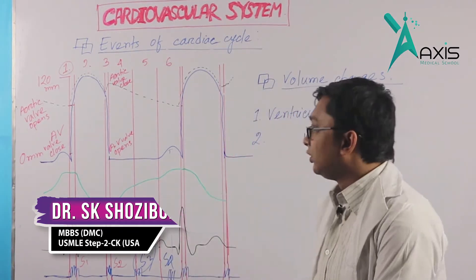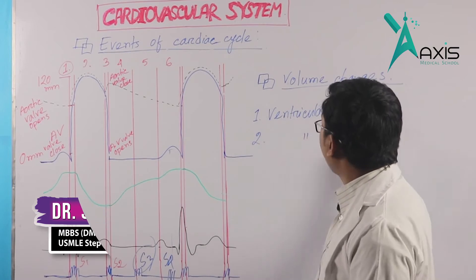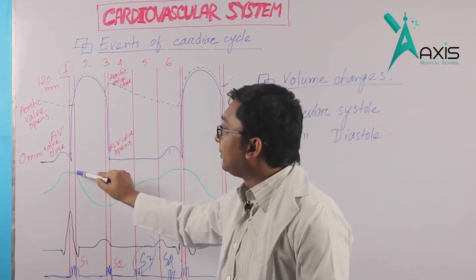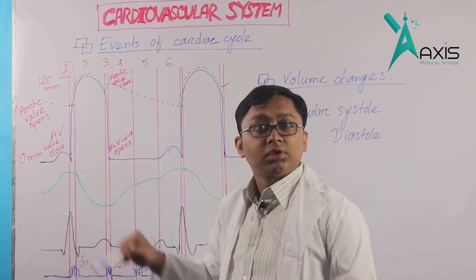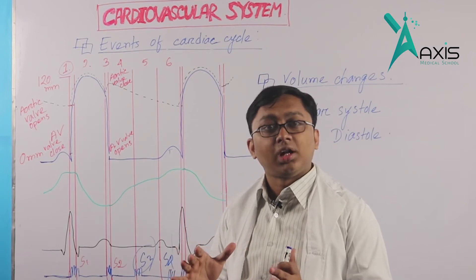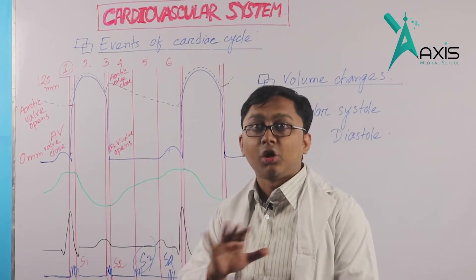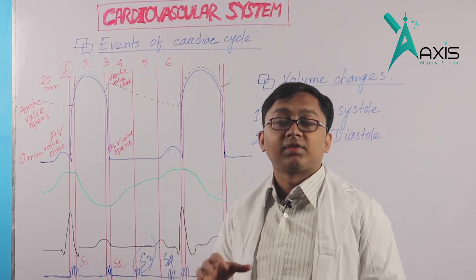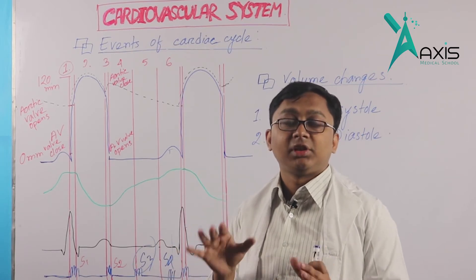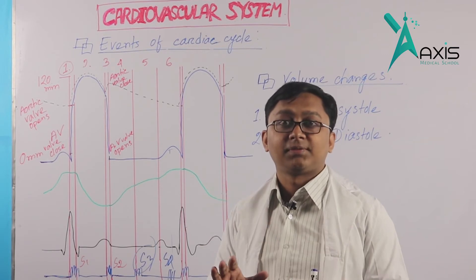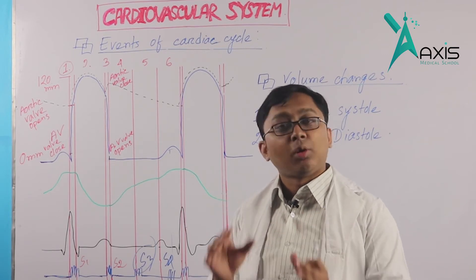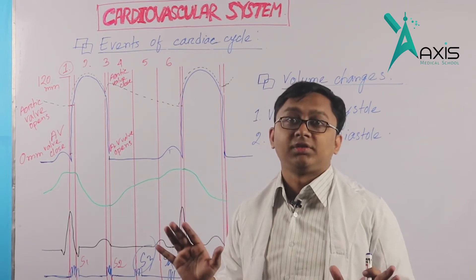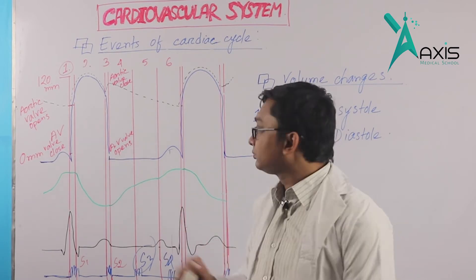During ventricular systole, every valve closes - atrioventricular and semilunar valves are all closed, and the ventricle is contracting as a closed cavity. That is the isovolumetric contraction phase. All valves are closed, so the volume doesn't change.